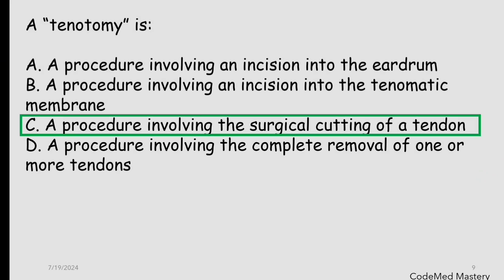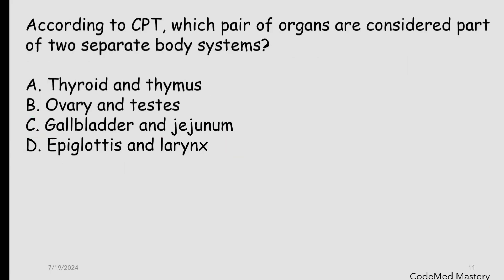Next question: according to CPT, which pair of organs are considered part of two separate body systems? Option A: thyroid and thymus; option B: ovary and testis; option C: gallbladder and jejunum; option D: epiglottis and larynx. The right answer is option B — ovary and testis — because the ovaries and testis are considered part of the endocrine system as well as the male and female genital systems according to CPT.